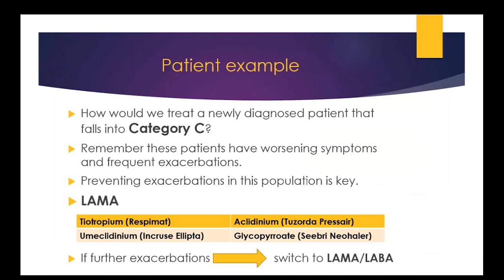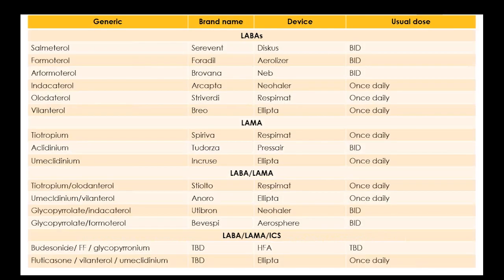For a patient newly diagnosed in category C — patients with worsening symptoms and frequent exacerbations — guidelines recommend starting with a LAMA: tiotropium, umeclidinium, aclidinium, or glycopyrrolate. If exacerbations continue on LAMA monotherapy, switch to a dual-drug LABA-LAMA combo. The key take-home point is this differs from previous guidelines: we used to push ICS-LABAs to prevent exacerbations; the push now is to start on LAMA agents for better exacerbation prevention and less pneumonia risk. De-escalation of therapy is also emphasized: if patients don't respond, remove the newly added agent, as there's no benefit and it may add to inhaler burden and cost.